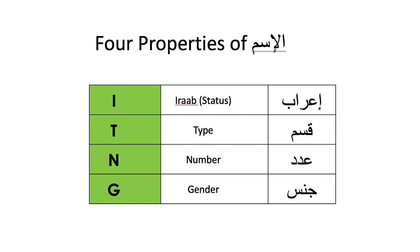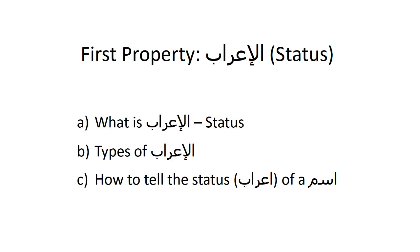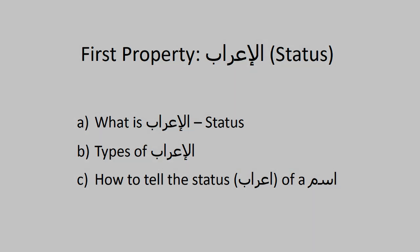As we know, there are four properties of ism. To remember, we call it I, T, N, G. I means I'rab or status. T means type of noun, whether it is definite or indefinite. N means number. And G means gender. So like everything else, status has also got three properties. What is this I'rab? What is the status? It will be explained in a minute. Then types of I'rab — what type of I'rab it is, and how to also tell the status of the I'rab in an ism.